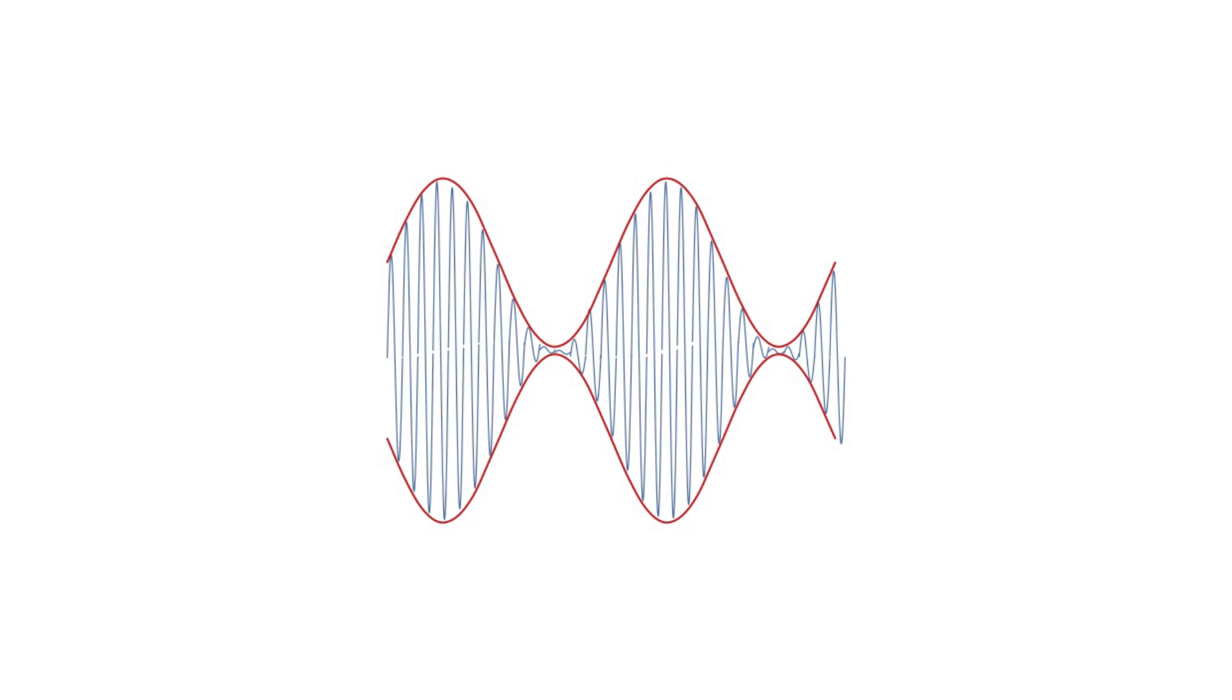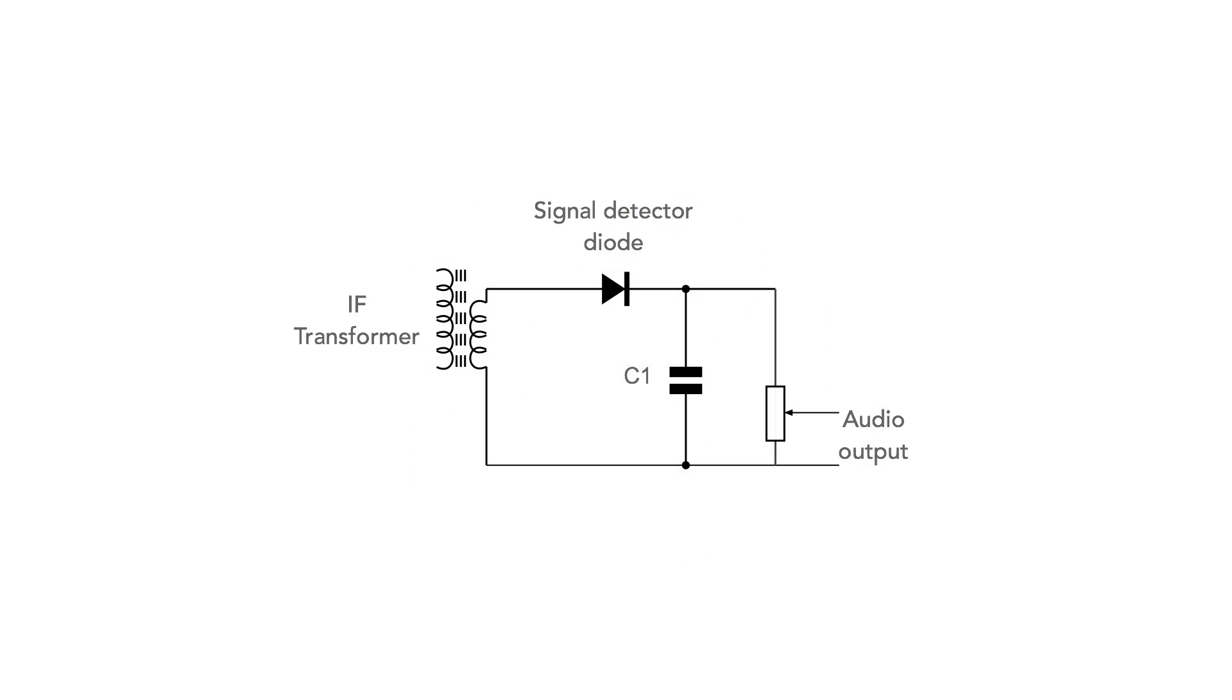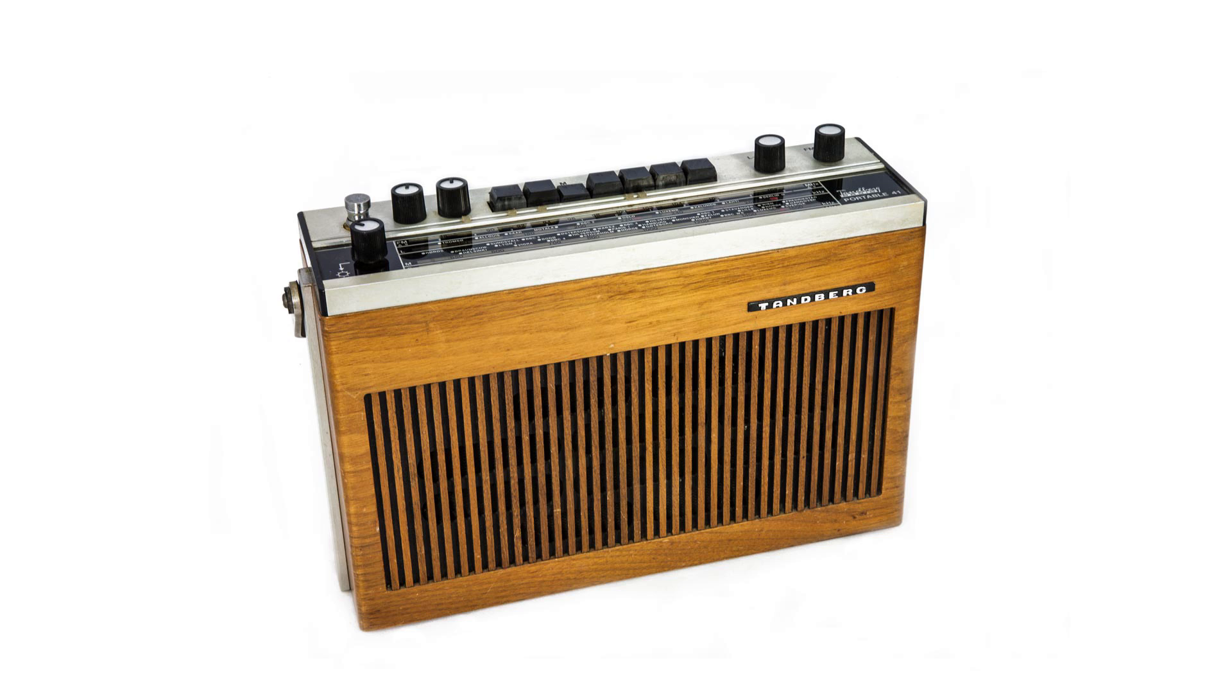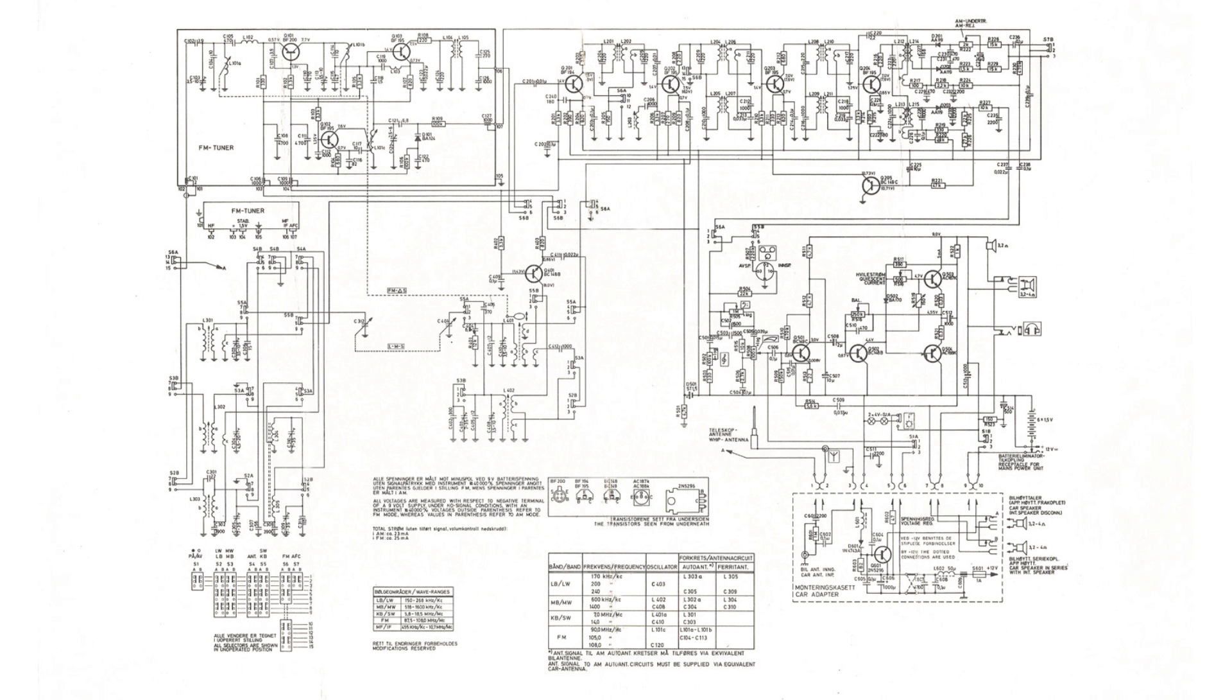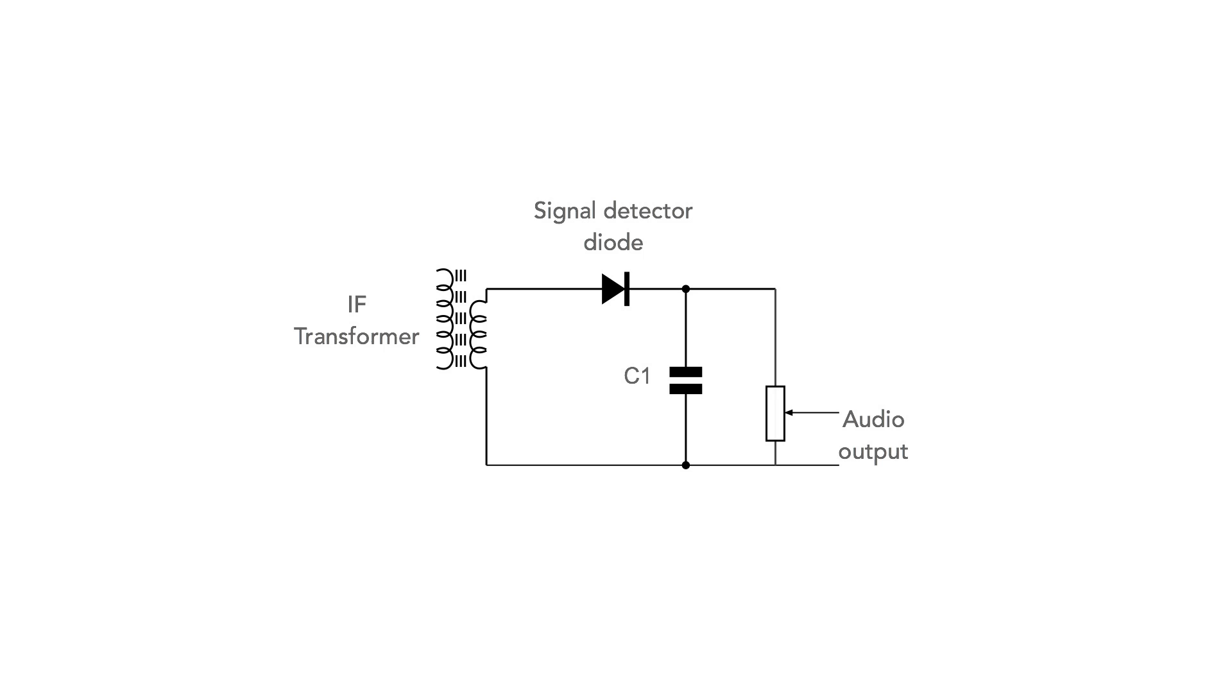In this video we're going to look at what amplitude modulation is and discover how a diode detector works and extracts the audio from an amplitude modulated signal. Within the circuits of many domestic broadcast radios there's a simple diode detector. Although better circuits are often used now, the diode detector found favor because it was cheap and very effective. Before looking at the diode detector itself, let's first take a look at what amplitude modulation or AM actually is.